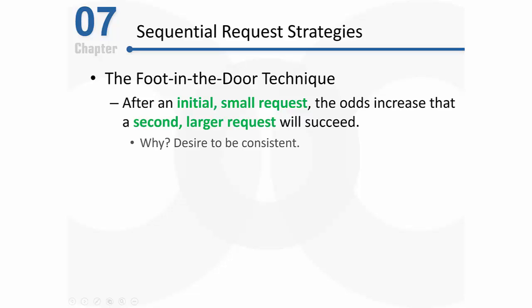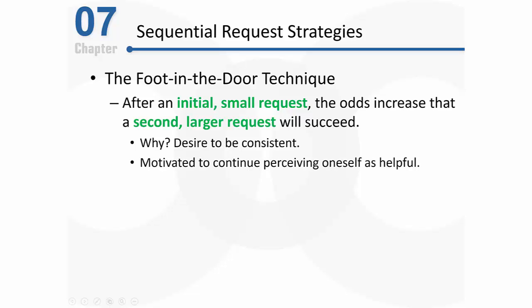Why does this tend to be successful? To some extent, we all desire to be consistent. If I just agreed to help you out by giving you $10, then I'm a helpful person — I must like you, you're my friend. It seems completely consistent that when you ask for a somewhat larger request of $50, I'm going to help you out again, at least in part due to my motivation to continue seeing myself as a helpful person.